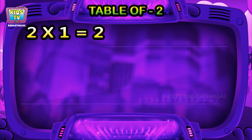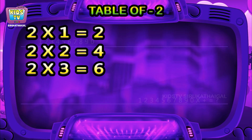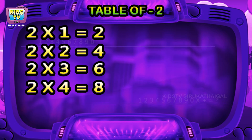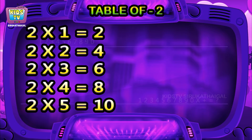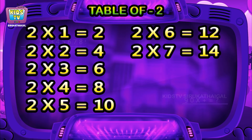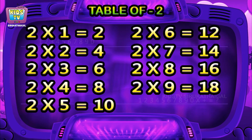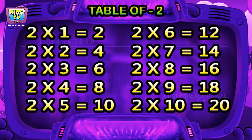2×1=2, 2×2=4, 2×3=6, 2×4=8, 2×5=10, 2×6=12, 2×7=14, 2×8=16, 2×9=18, 2×10=20.